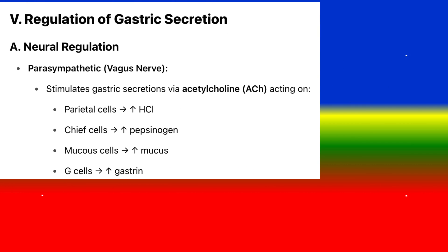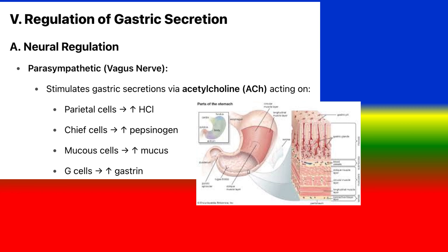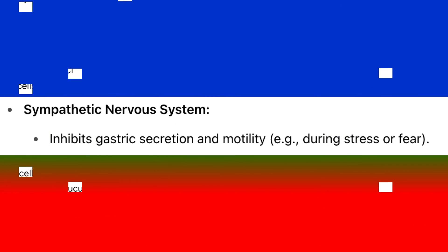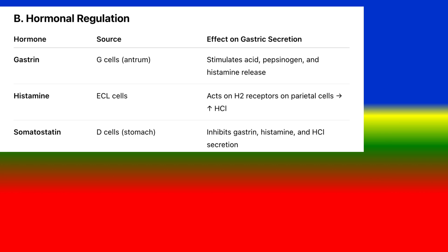Regulation of gastric secretion — A. Neural regulation: Parasympathetic (vagus nerve) stimulates gastric secretions via acetylcholine, acting on parietal cells to produce HCL, chief cells to produce pepsinogen, mucous cells to produce mucus, and G cells to secrete gastrin. The sympathetic nervous system inhibits gastric secretion and motility, for example during stress or fear.